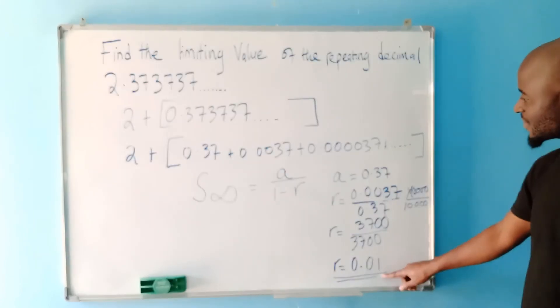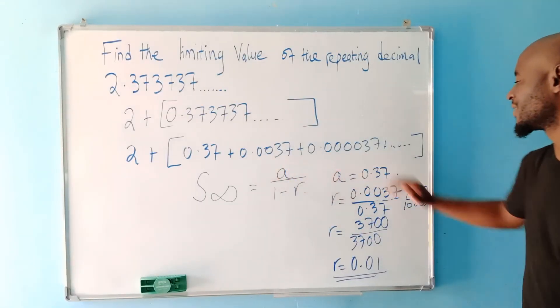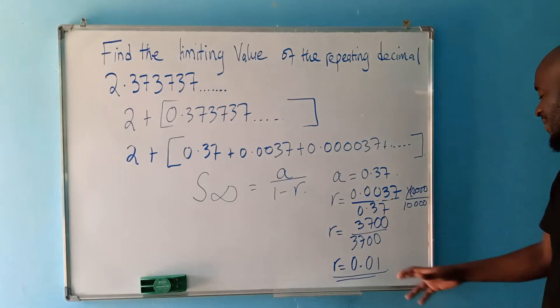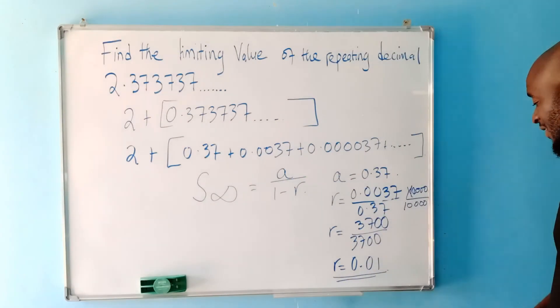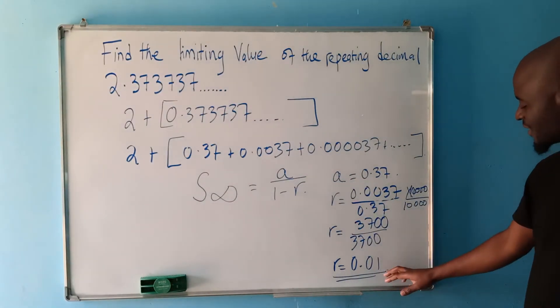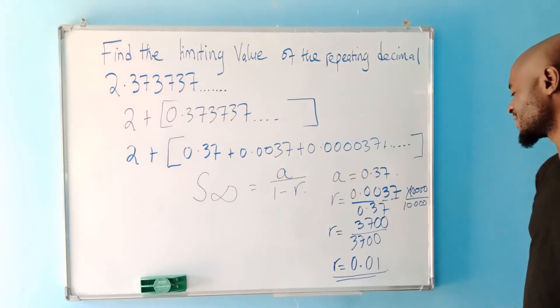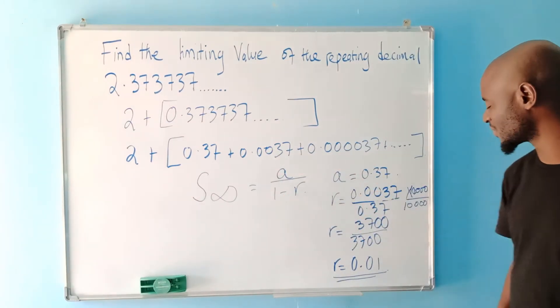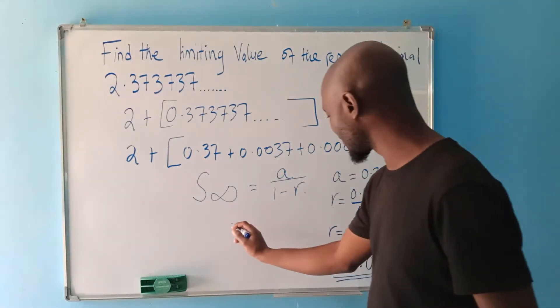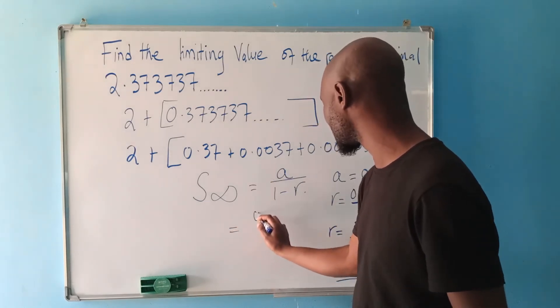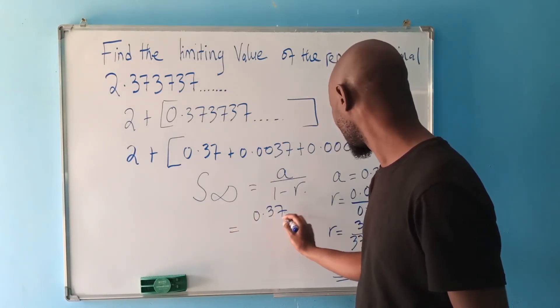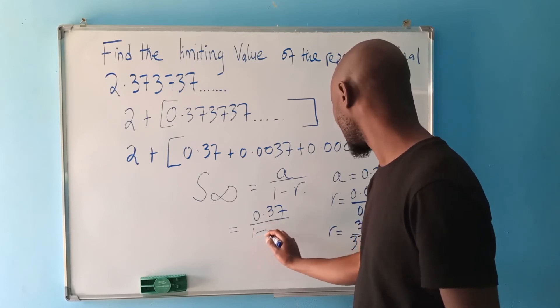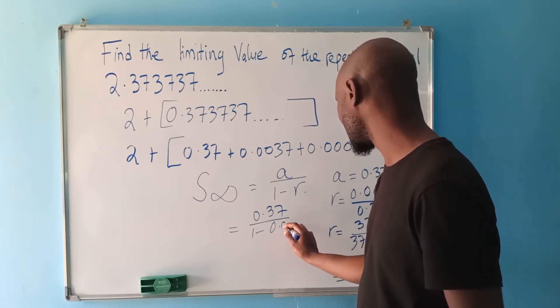Now, this common ratio tells you that this sequence will have a limiting value. The sequence is a convergent sequence. So we need to find the limiting value for this particular sequence using what we call the sum to infinity. So here, we are going to have sum to infinity is equal to, the first term is 0.37 over 1 minus R is 0.01.